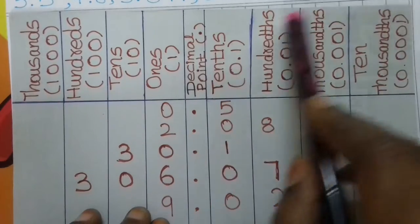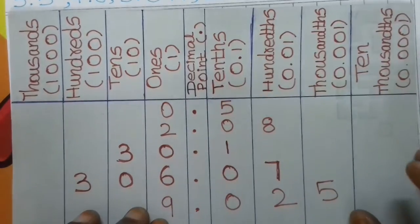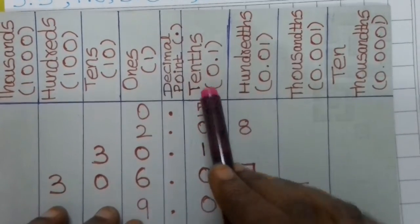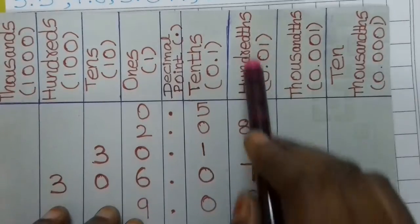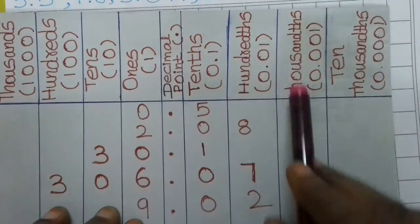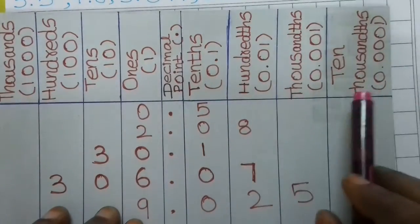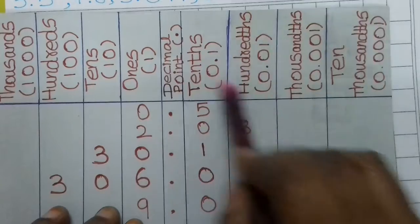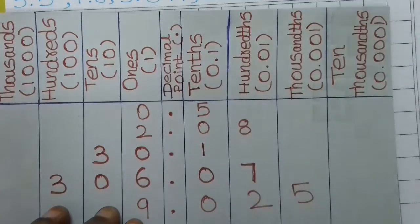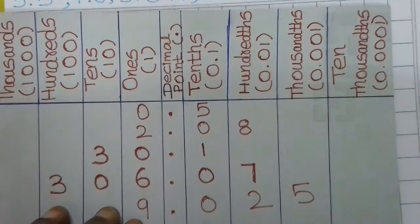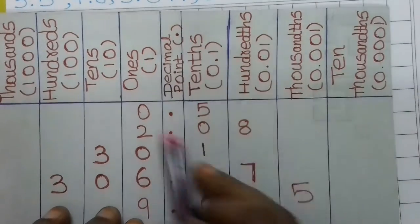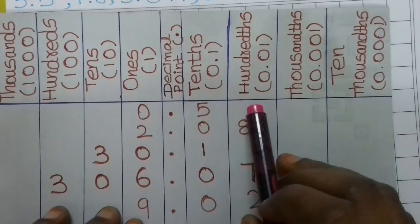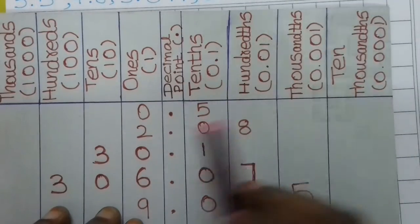To the right of the decimal point — the decimal part — starting from the decimal point we have tenths, hundredths, thousandths, and ten-thousandths. This is the decimal part. The decimal number's place value is mentioned first.